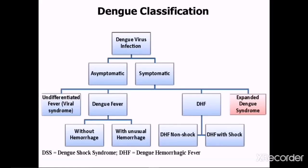Dengue classification has two main categories: asymptomatic and symptomatic. In symptomatic dengue viral infection, the first subcategory is undifferentiated fever, where the patient experiences fever with mild nonspecific symptoms that can mimic other acute febrile illnesses and will not meet the case definition criteria for dengue fever. The nonspecific presentation makes positive diagnosis difficult, but these patients eventually recover without hospital care.